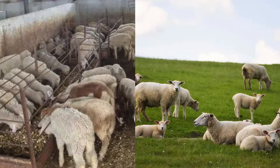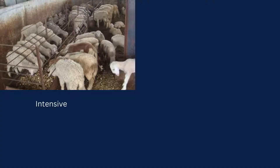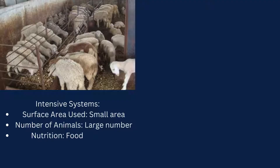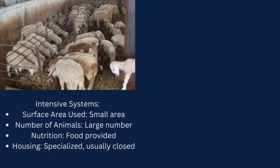Let's start by breaking down the key differences between intensive and extensive production systems. Intensive systems typically involve smaller areas of land and house a large number of animals. Extensive systems, however, cover large areas with animals that are spread out.